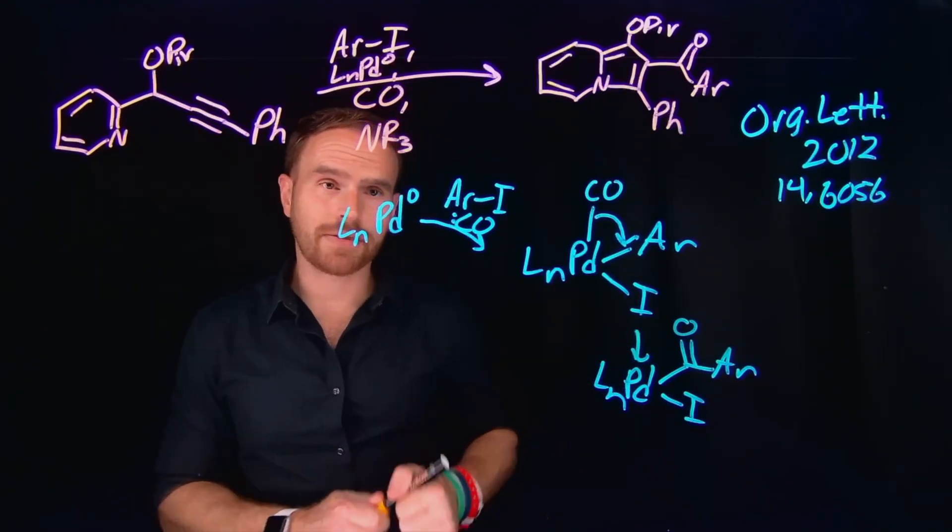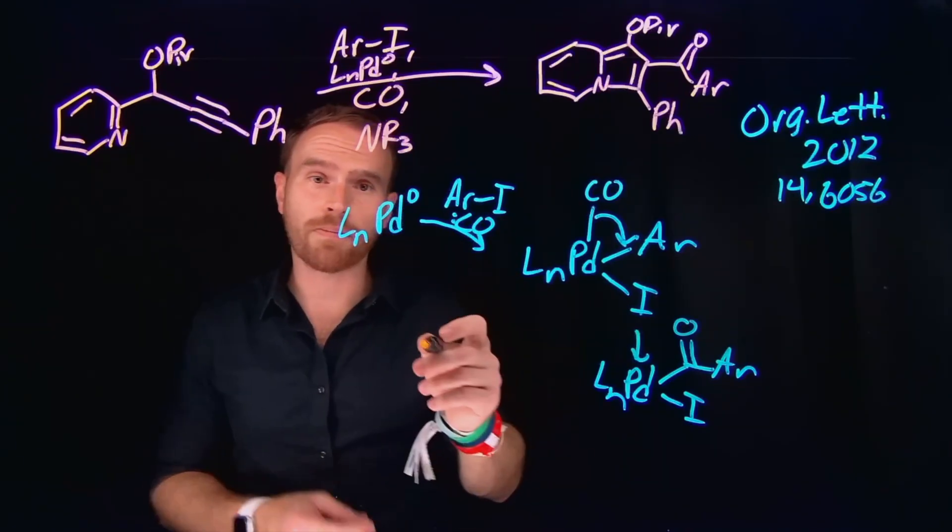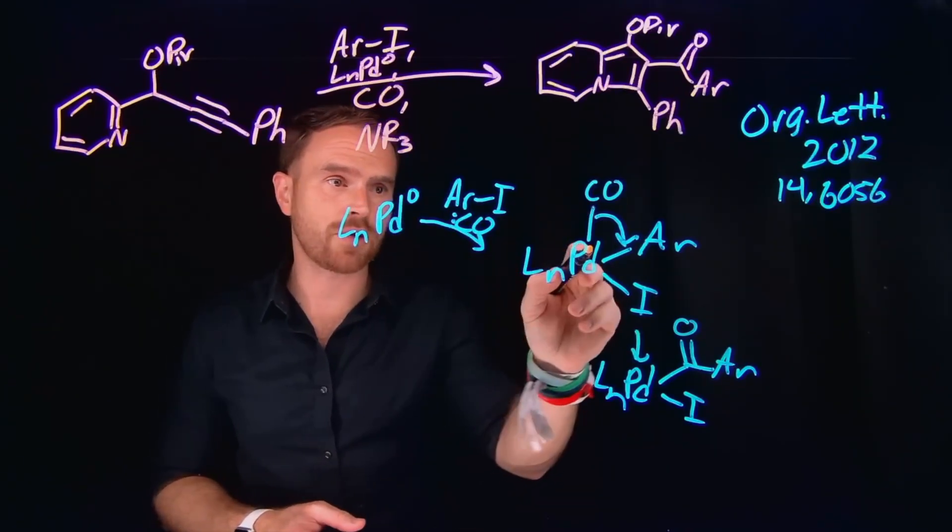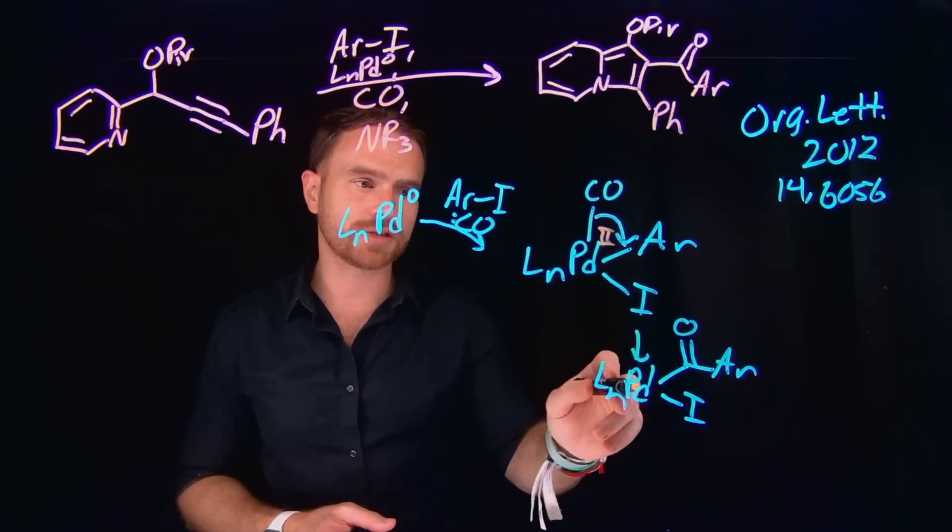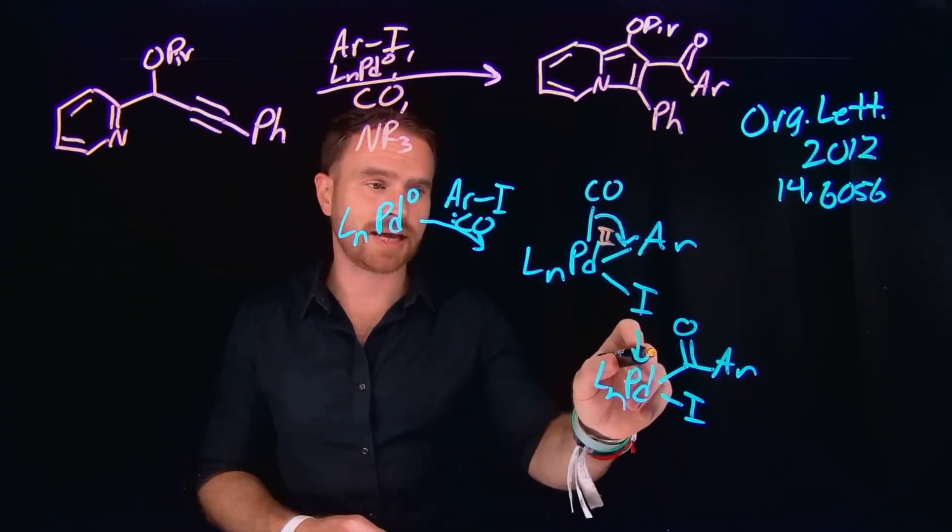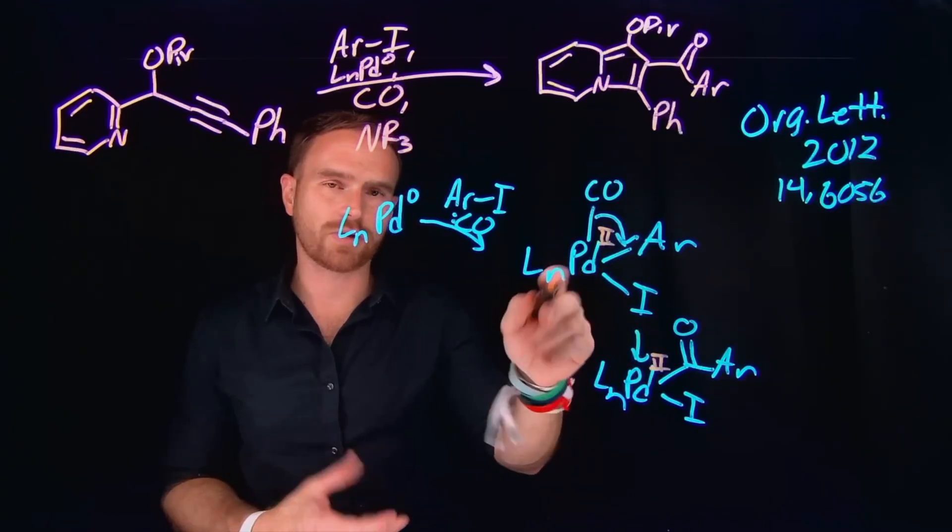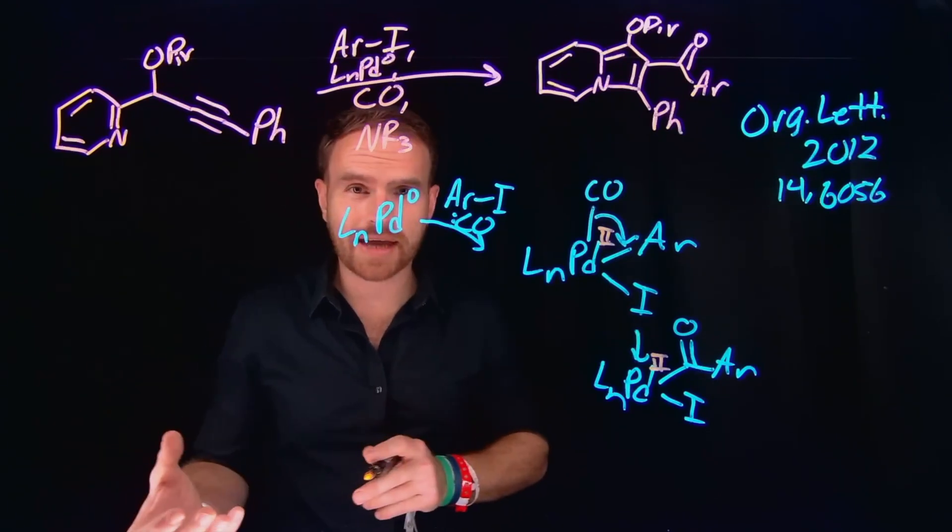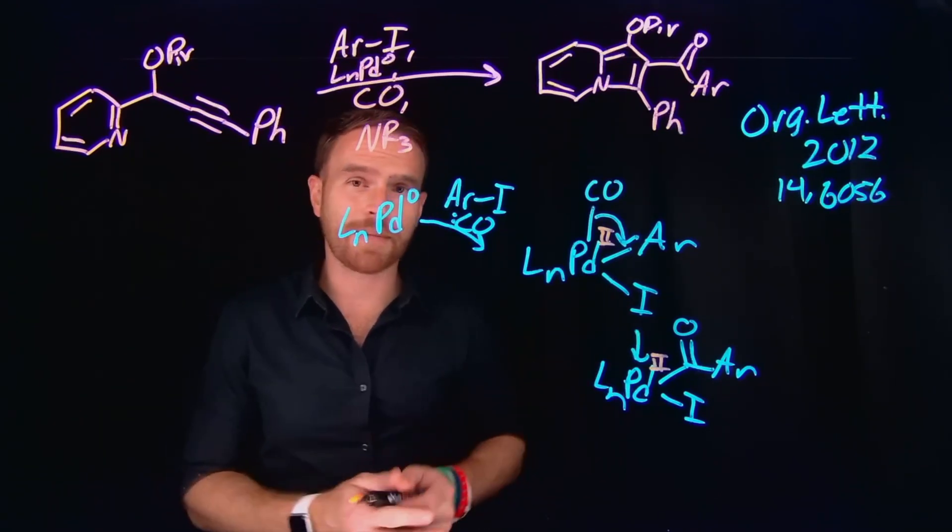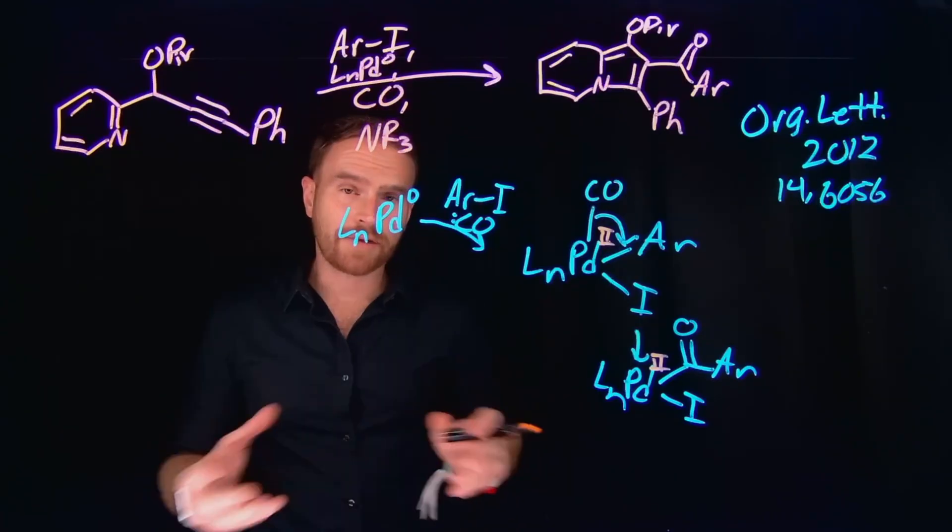And now I should mention that oxidative addition, as the name implies, actually oxidizes the metal by a factor of two. So palladium zero would have become palladium two plus, and following migratory insertion, it actually still remains as palladium two plus. So even though the total number of electrons of this system would have changed, the oxidation state of the metal would not have changed. And if you're interested in electron counting or determining oxidation states of metals, I actually have videos that you can check out about organometallic chemistry.